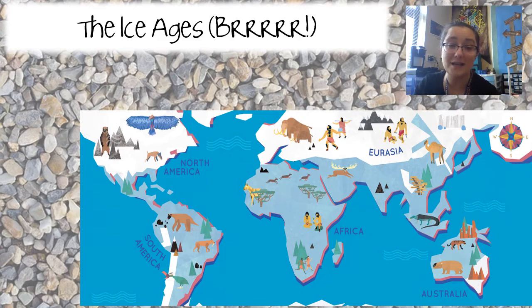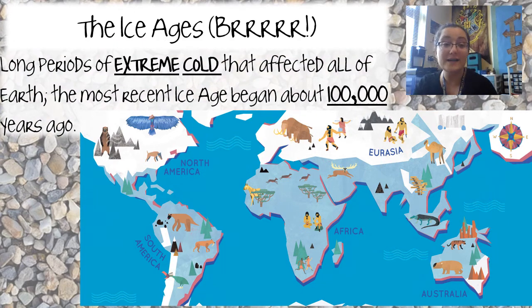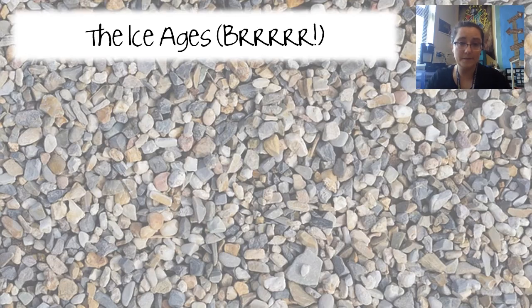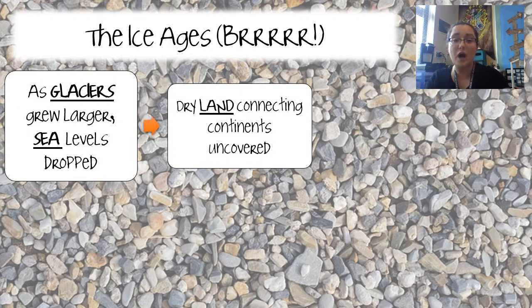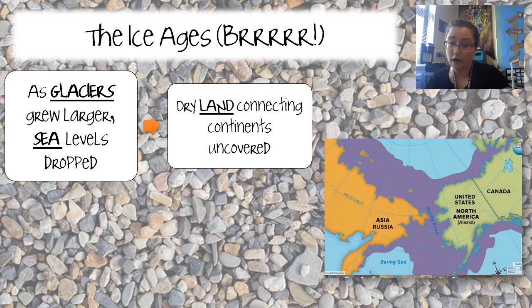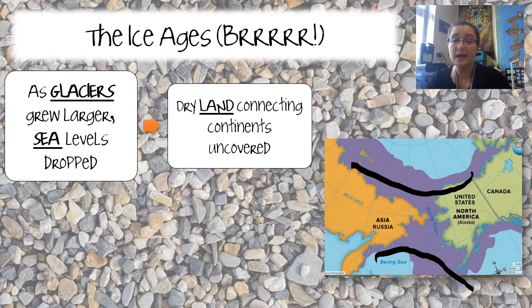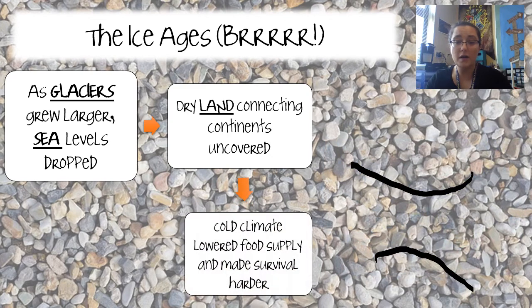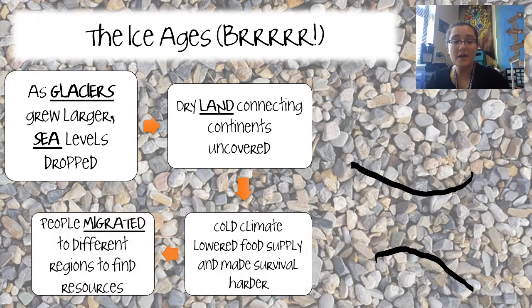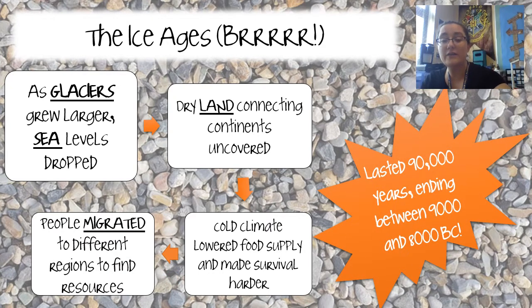We then get to the ice ages — long periods of extreme cold that affected all of Earth. The most recent ice age began about 100,000 years ago. During this time, glaciers — big sheets of ice — covered lots of land. As glaciers grew larger, sea levels dropped and dry land connecting the continents was uncovered, including a land bridge between North America and Asia/Russia. When it was cold and harder to survive, people migrated to different areas, crossing over those ice bridges.